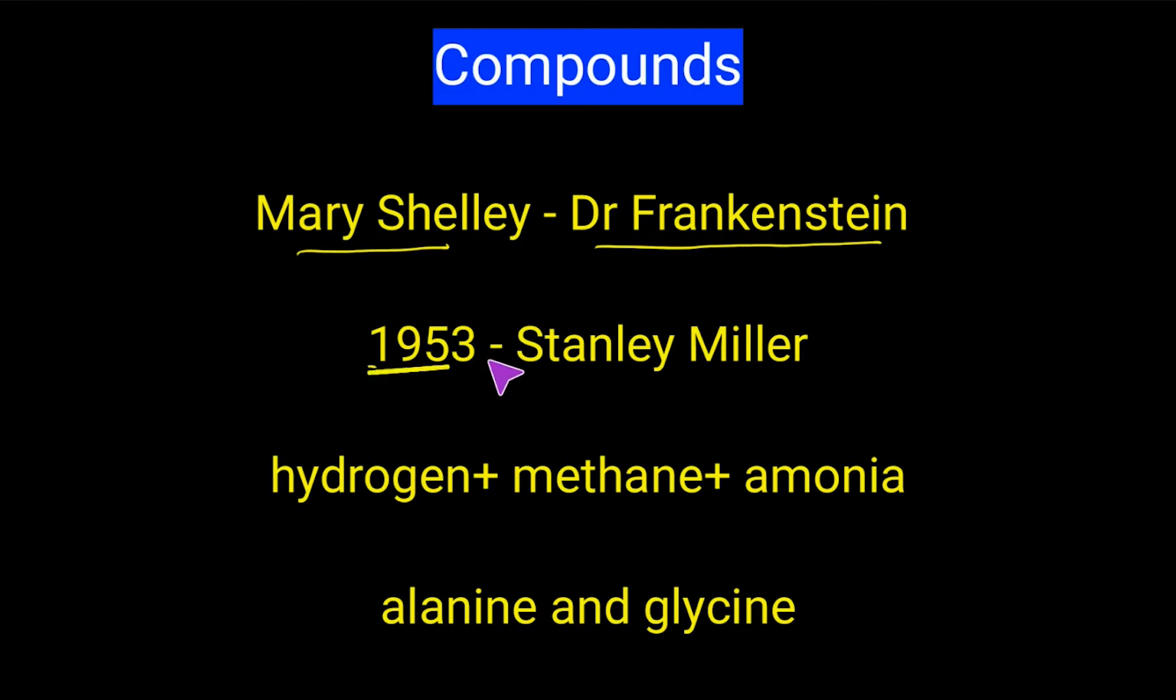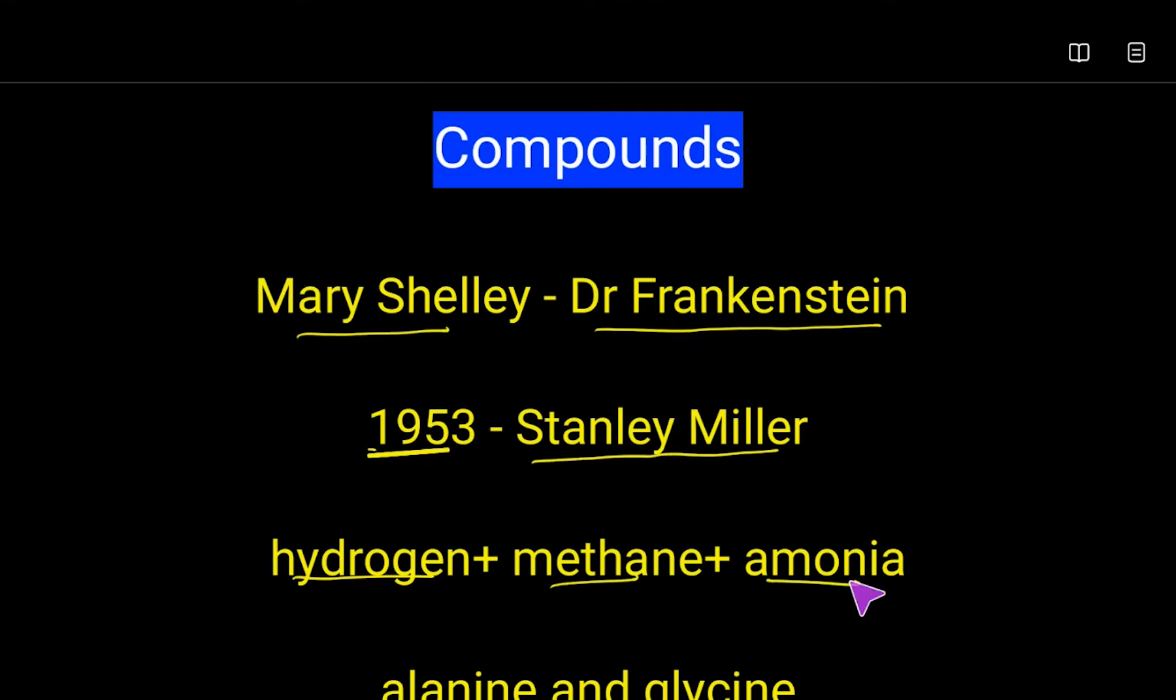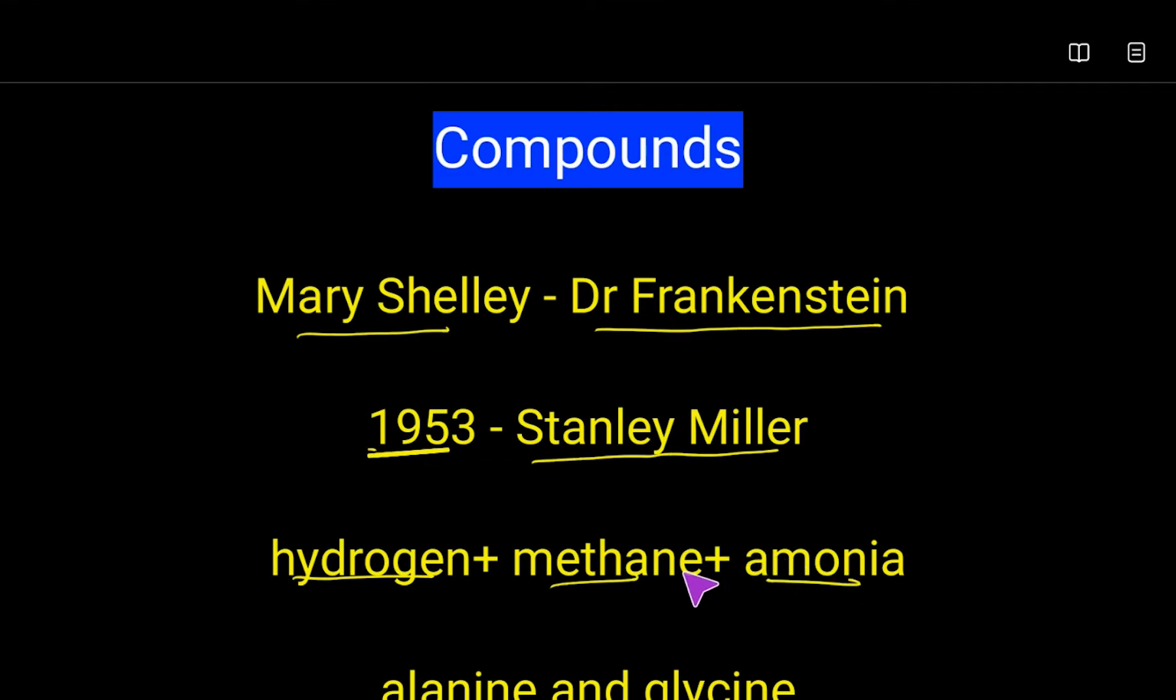In 1953, Stanley Miller, who was born in 1930, mixed together hydrogen, methane, and ammonia and put them in a container with water for a week. He passed electricity through the mixture just like lightning. At the end of the week, he found he had made two of the chemicals most important to life: alanine and glycine.